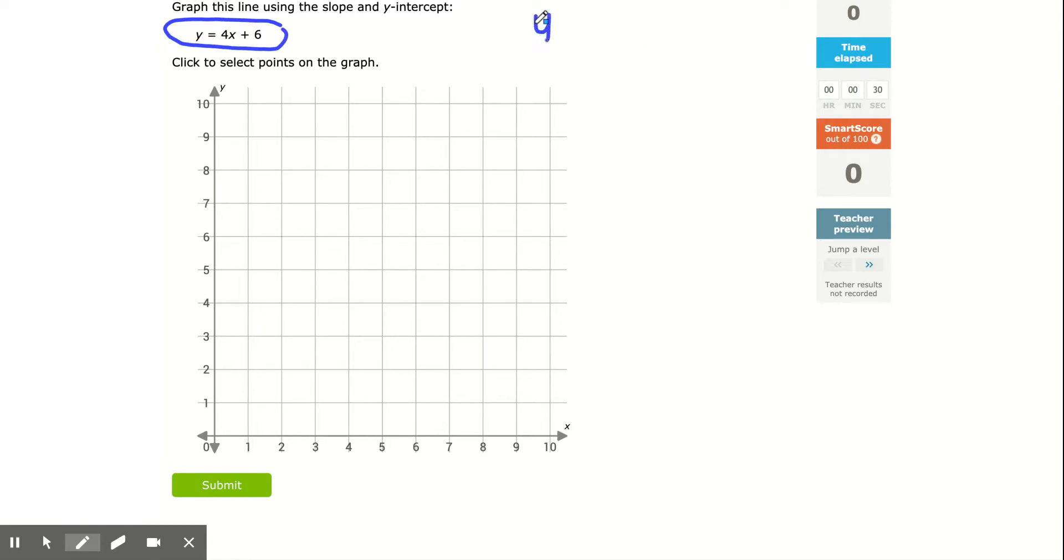So as a reminder, we have y equals mx plus b, where the value in front of the x, that number that sits in front, is our slope, which again, more specifically, is rise over run, our rate of change. The b value here is my y-intercept where I cross the y-axis.